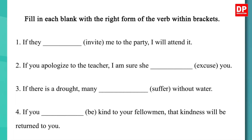Look at the first sentence: 'If they ___ invite me to the party, I will attend it.' There is a blank in the condition, and in the condition the verb should be in simple present tense. So the answer is: 'If they invite me to the party, I will attend it.' Now the second one: 'If you apologize to the teacher, I'm sure she ___ excuse you.' The blank is in the result clause, so the verb should be in simple future tense. The answer is: 'If you apologize to the teacher, I'm sure she will excuse you.'